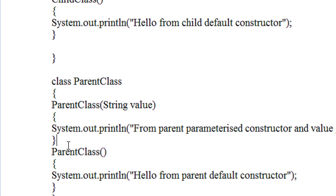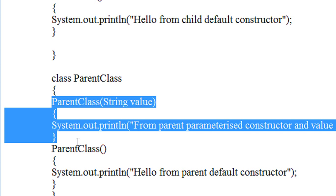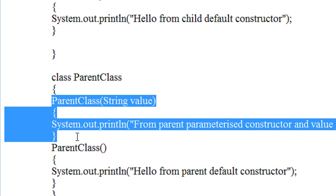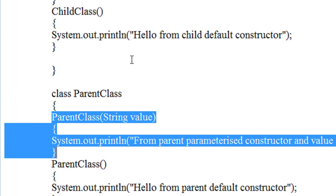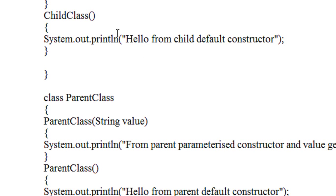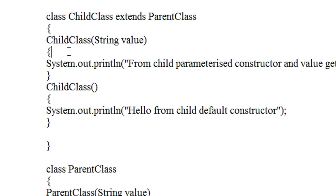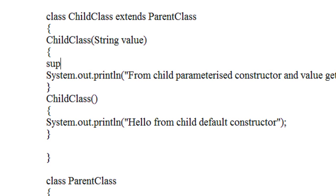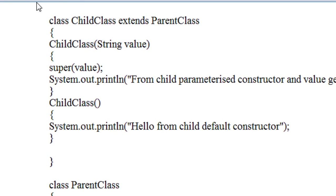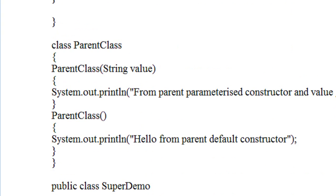So in this situation we use the super keyword. The super keyword is nothing but a keyword used to invoke a parent constructor — it represents the parent constructor. The parameterized constructor of parent is escaped from execution, so we have to use the super keyword to make the parameterized constructor of parent executable. We add the super keyword inside the child constructor and pass the value from the object creation as an argument: super(value). Then I save the program and compile it.